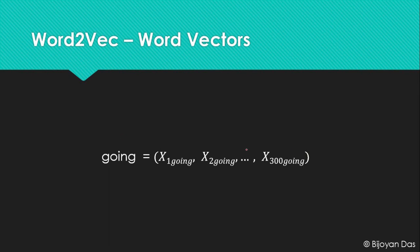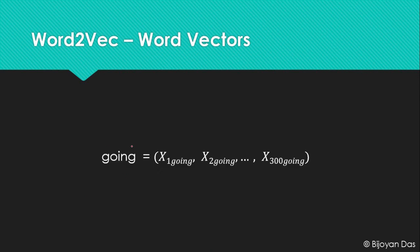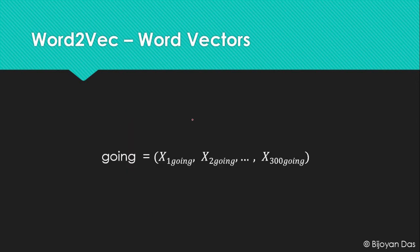Once we have these vectors for all the different words, we have pretty much created our Word2Vec model. The vectors preserve semantic information because we derived them by factorizing the co-occurrence matrix — so that's the reason why they have semantic information stored even in this form.